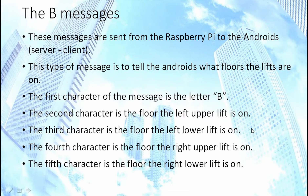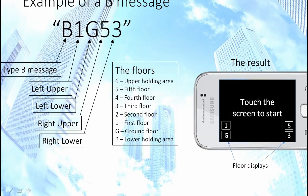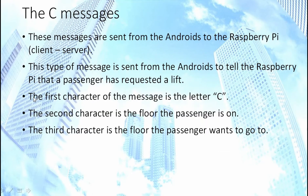The B messages are sent from the Raspberry Pi to the Androids (server to client). This type of message tells the Androids what floors the lifts are on. When the screen shows 'touch the screen to start' it also shows what floors the lifts are on. A B message looks like: B as the first letter, then left upper, left lower, right upper, and right lower floor positions.